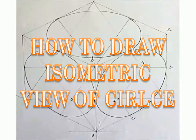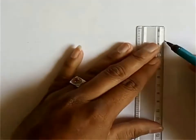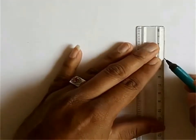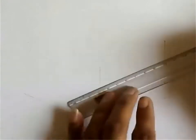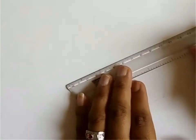Today we are going to draw isometric view of circle. First we will draw an isometric cube, on the surfaces of which we are going to draw circles.